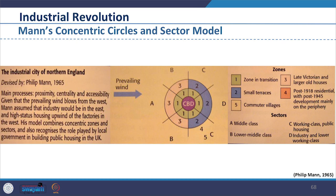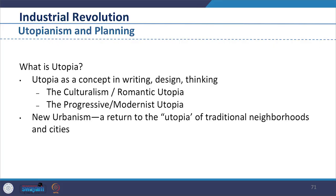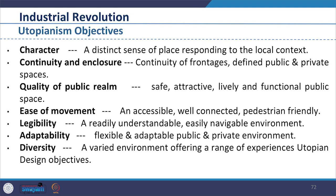Four basic zones were: middle class, lower middle class, working class and lower working class, to which the CBD, the transitional zone, a zone of smaller houses and the outermost zone were added. Utopia is an imagined place or state in which everything is perfect. New urbanism was a return to the utopia of traditional neighbourhoods and cities. The objectives of utopianism were: a distinct sense of place responding to local context, continuity of frontages, defined public and private spaces, quality of public realm, safety, attractiveness, living and functional public space, well-connected pedestrian-friendly space with an easily navigable, flexible and adaptable environment.